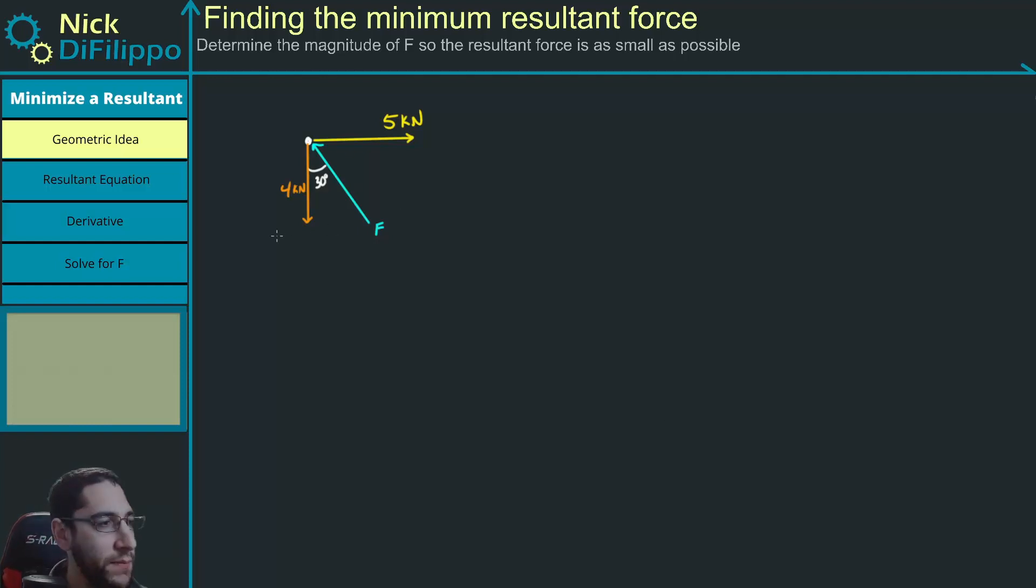So first, what is this problem asking? Let's draw this 5 kilonewtons here. We're going to do vector addition. So here we have 4 kilonewtons, and here we have just a line that represents some magnitude of F, and we don't know what that length F is.